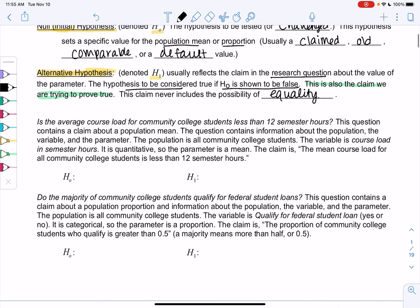Let's look at some hypotheses. We have everything in regular language and we'll convert it to statistics. Here's my research question: Is the average course load for community college students less than 12 semester hours? I think we're talking about average, so that means it's a claim about the population mean. So our hypothesis will involve mu. The question contains information about the population - all community college students. The variable would be semester hours, and the parameter would be the population mean. The claim is that the mean course load for all community college students is less than 12 hours.